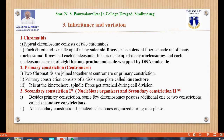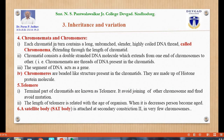Two chromatids are joined together at the centromere or primary constriction. The primary constriction consists of a disc-shaped plate called the kinetochore. It is at the kinetochore that spindle fibers get attached during cell division. Some chromosomes possess additional constrictions called secondary constrictions. At the secondary constriction, the nucleolus becomes organized during interphase. Chromonemata are long, unbranched, highly coiled DNA threads running through the length of the chromatid.